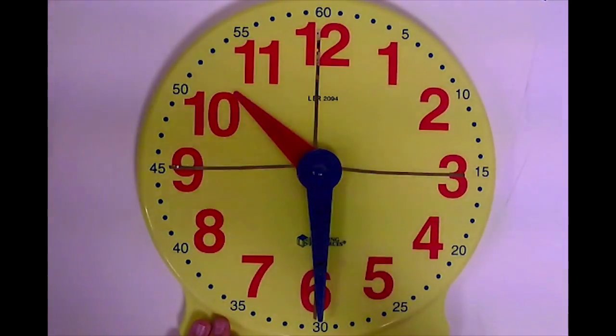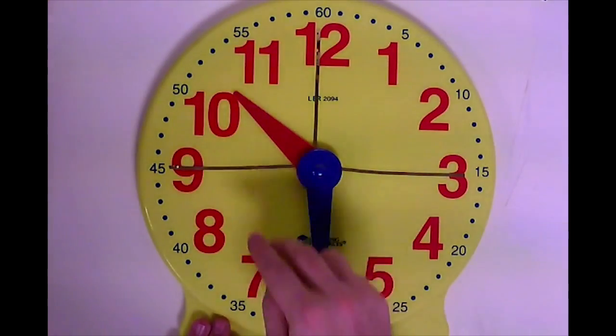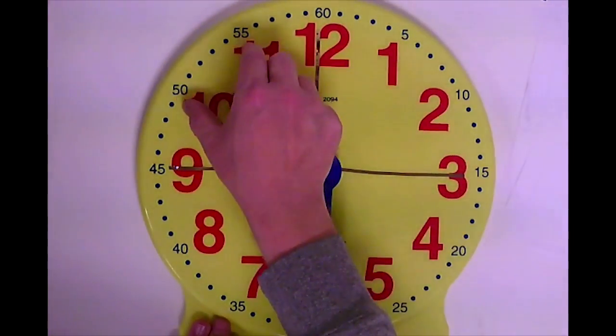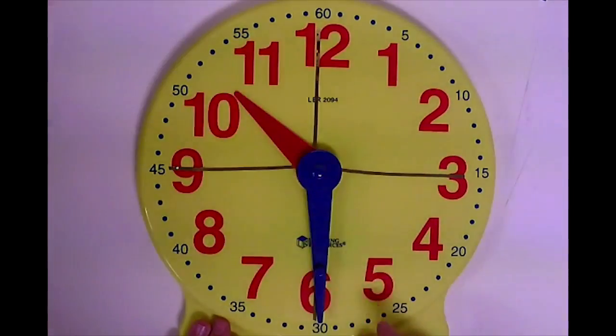When you're reading a clock, you need to know one very specific thing. If the hour hand, which is the smaller, thicker hand, if the hour hand is in between two numbers, so the 11 and the 10, it's always the smallest number that you read first.